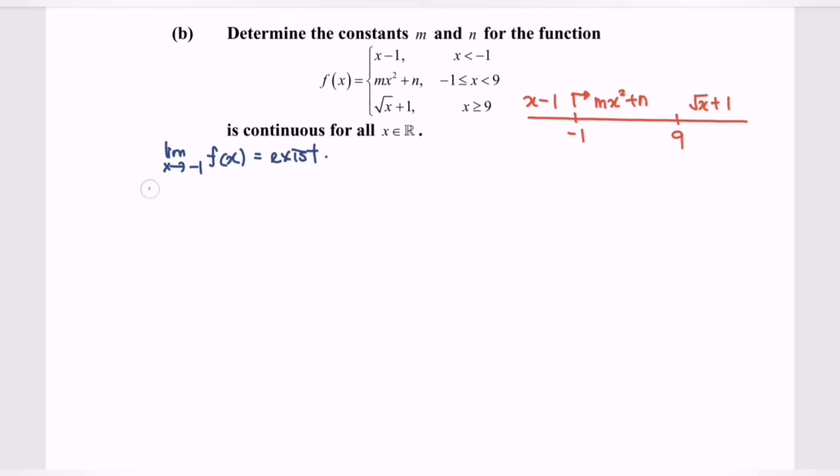In here, the limit when x approaching negative 1 from the left for the function x minus 1 is equal to the limit when x approaching negative 1 from the right. The function will be mx² + n.